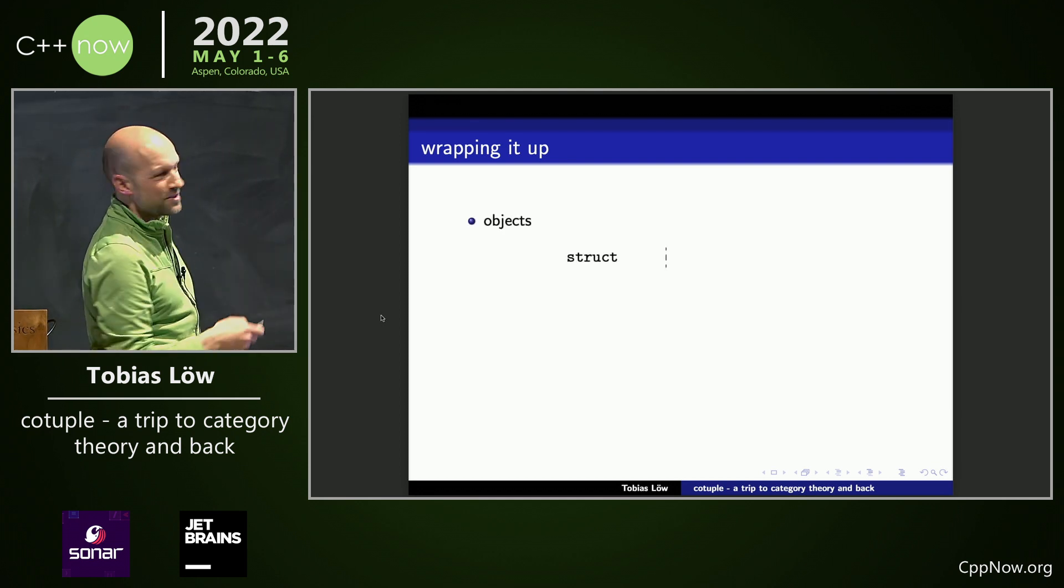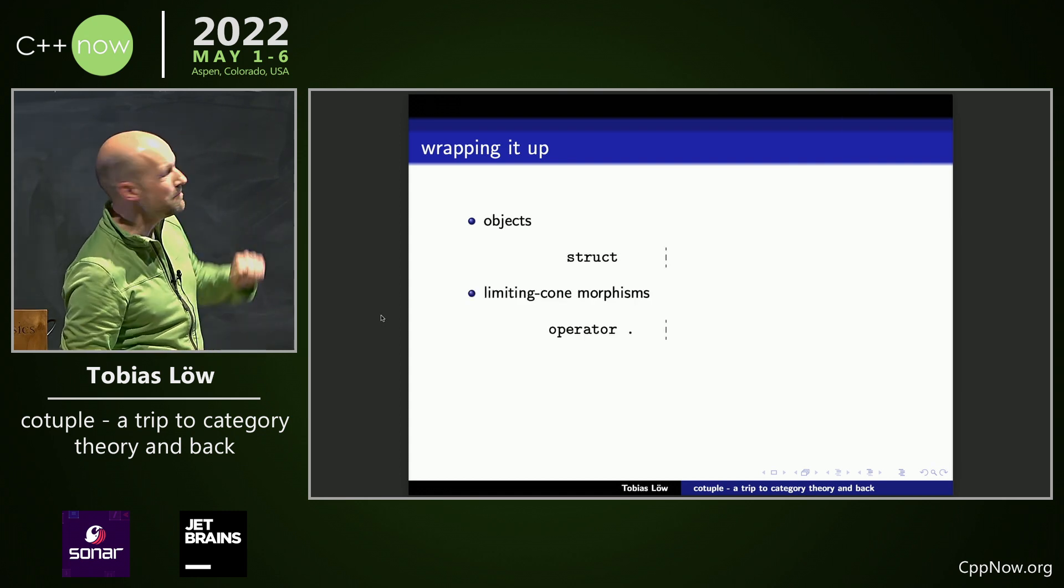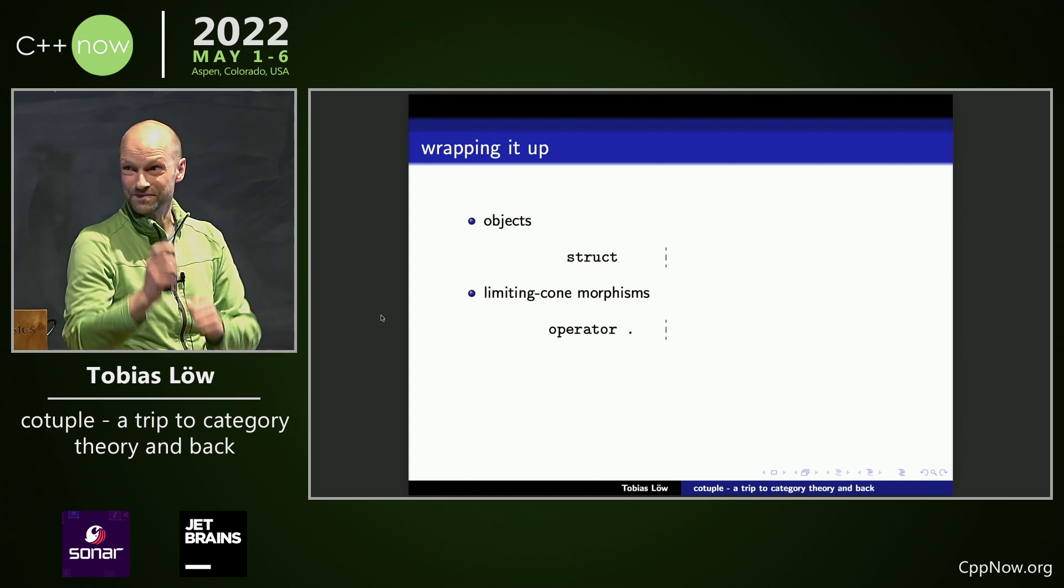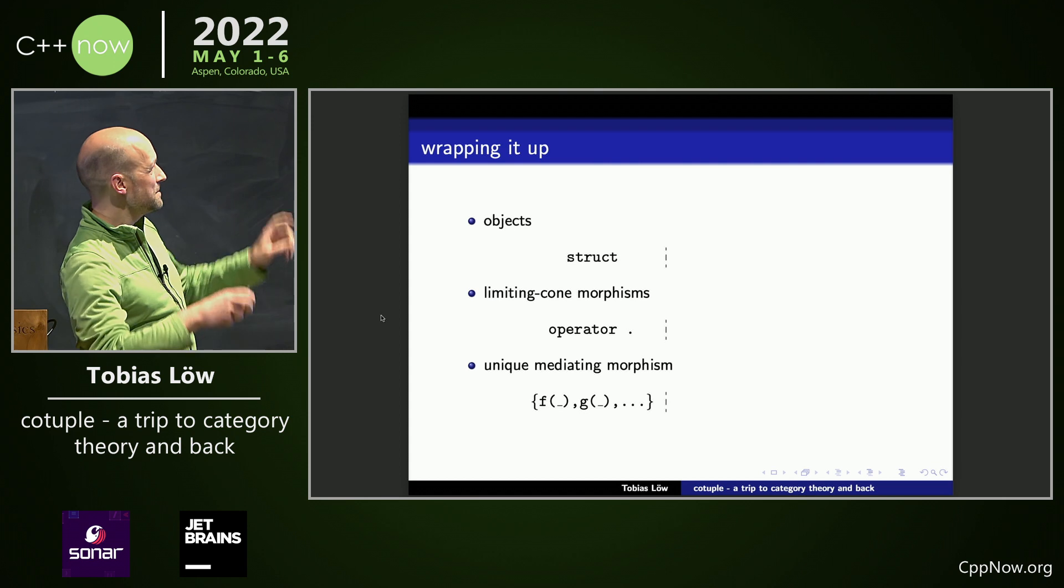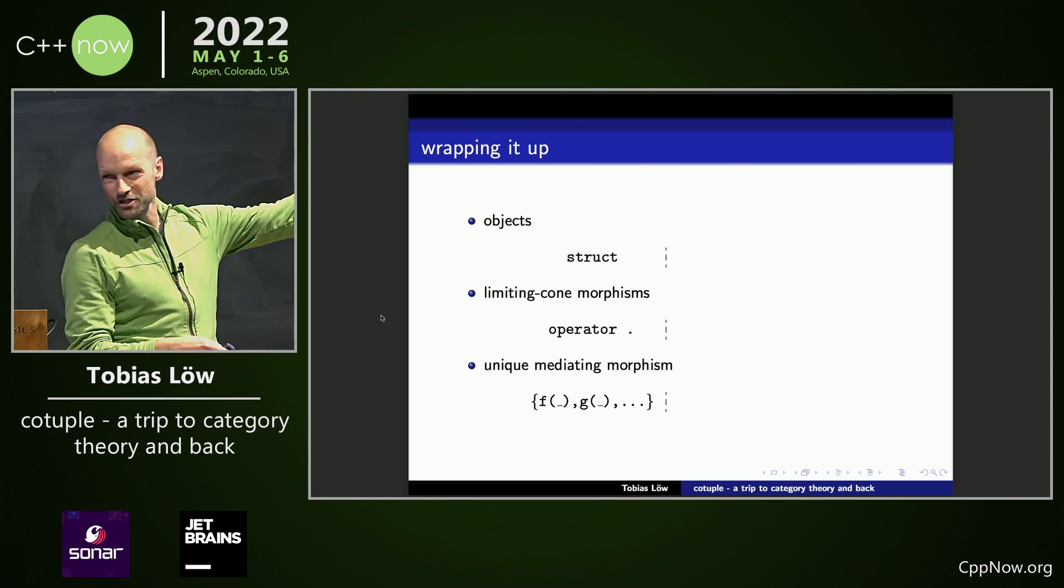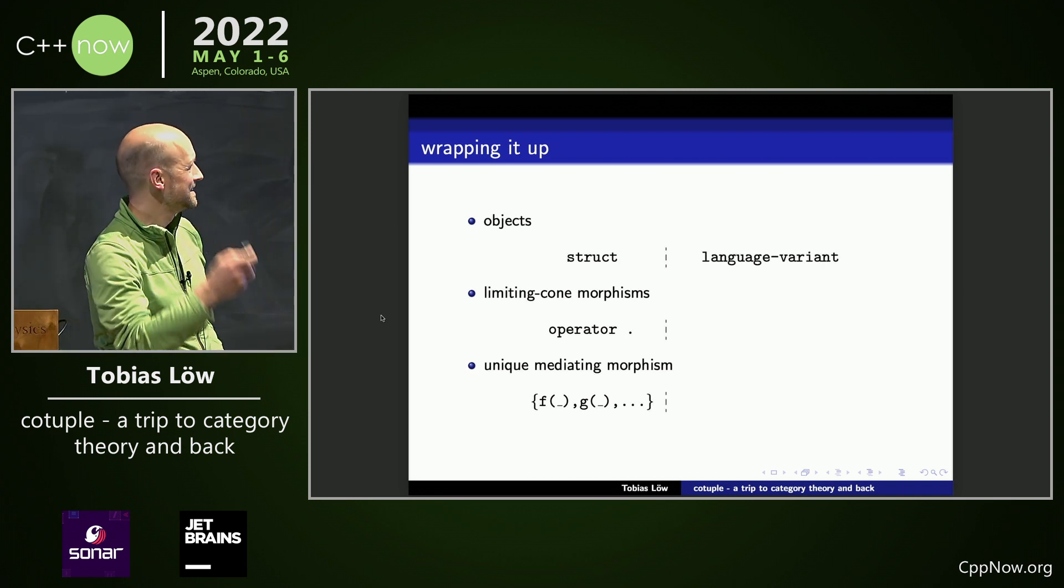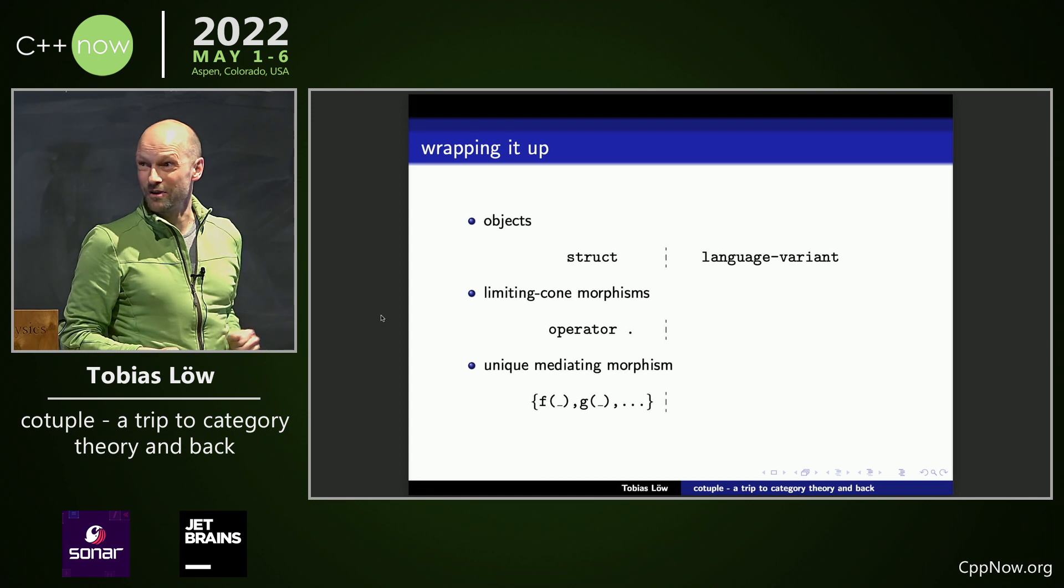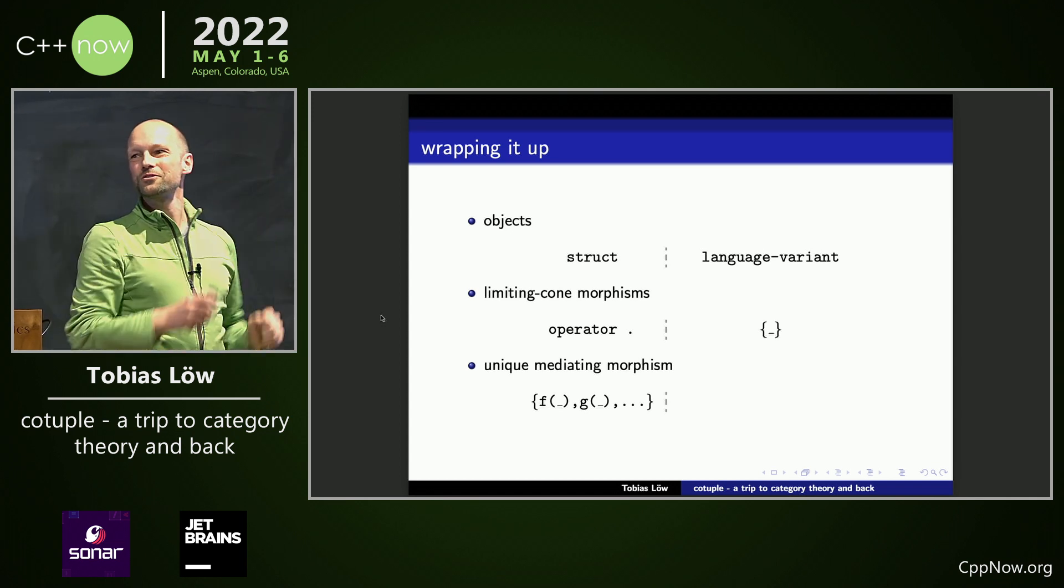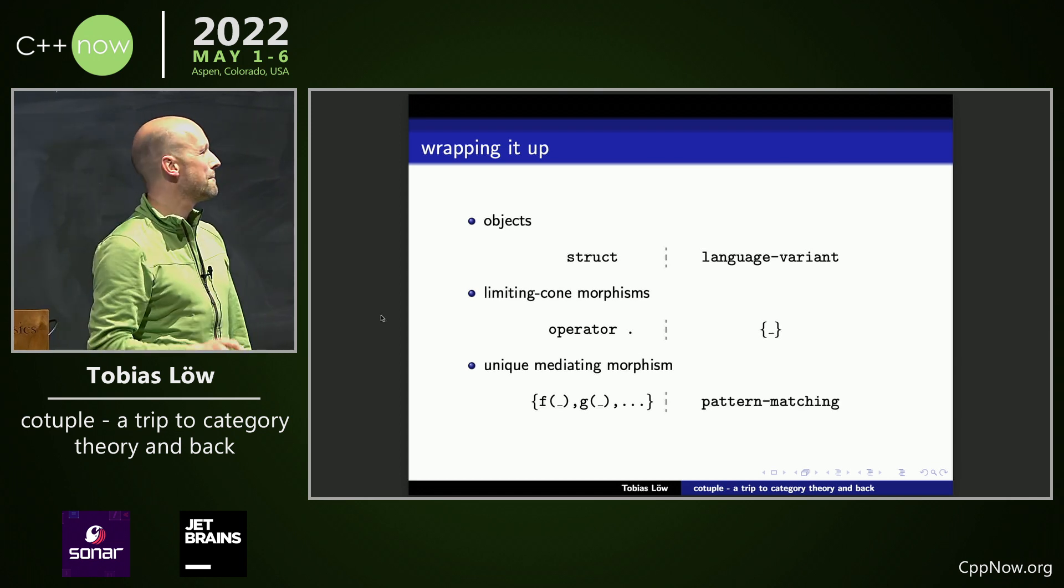Let's assume on the left hand side we have struct. Going down, the limiting cone morphisms are just operator dot. It's a projection. And the unique mediating morphism is just building your struct from F, G, and whatever comes there. So what's on the right hand side here? It would be the language variant. The limiting cone would just be constructing a language variant. And down here, we would have pattern matching.